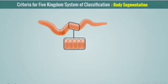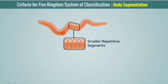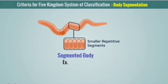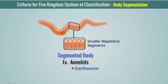In some animals there are repeated units of segments — smaller repetitive segments. This is called body segmentation. Body segmentation occurs in some animals, for example annelids.